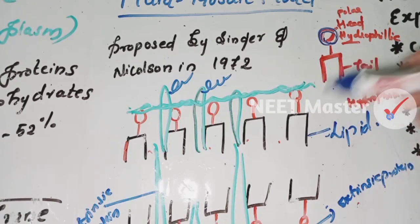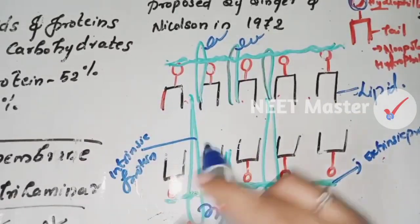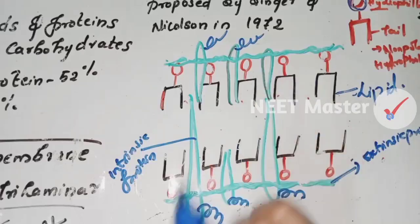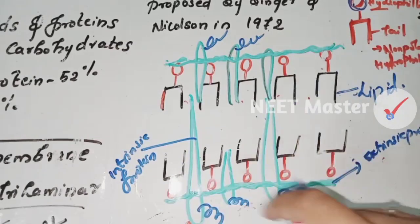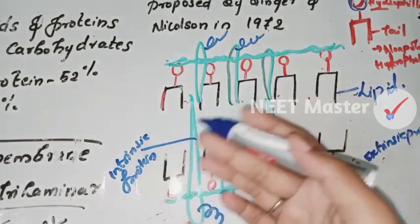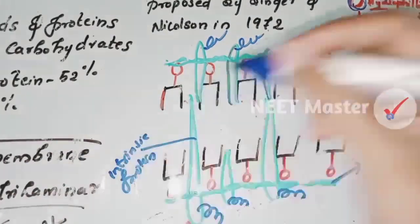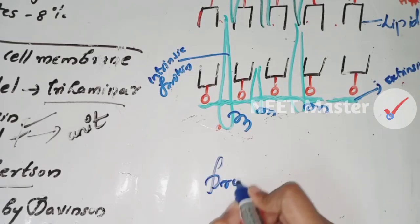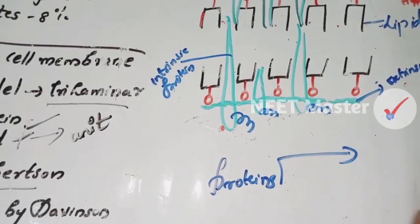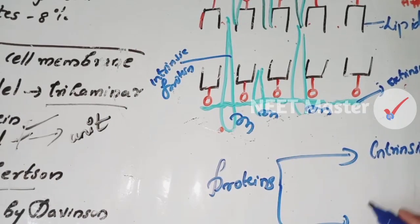The polar hydrophilic head faces outward and the nonpolar hydrophobic tail faces inward. Now, proteins in the membrane are divided on the basis of extraction into two types: intrinsic proteins and extrinsic proteins.